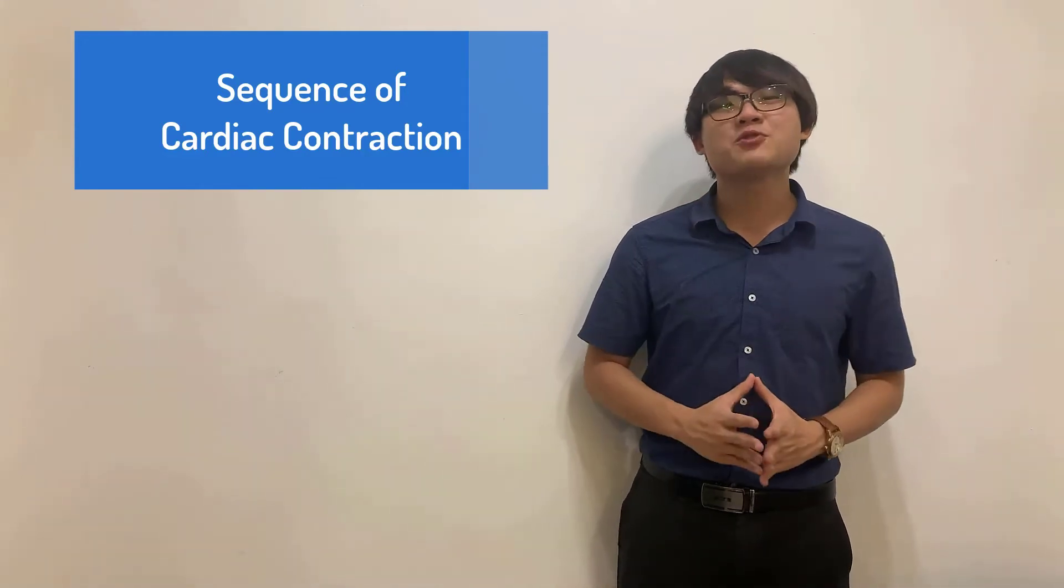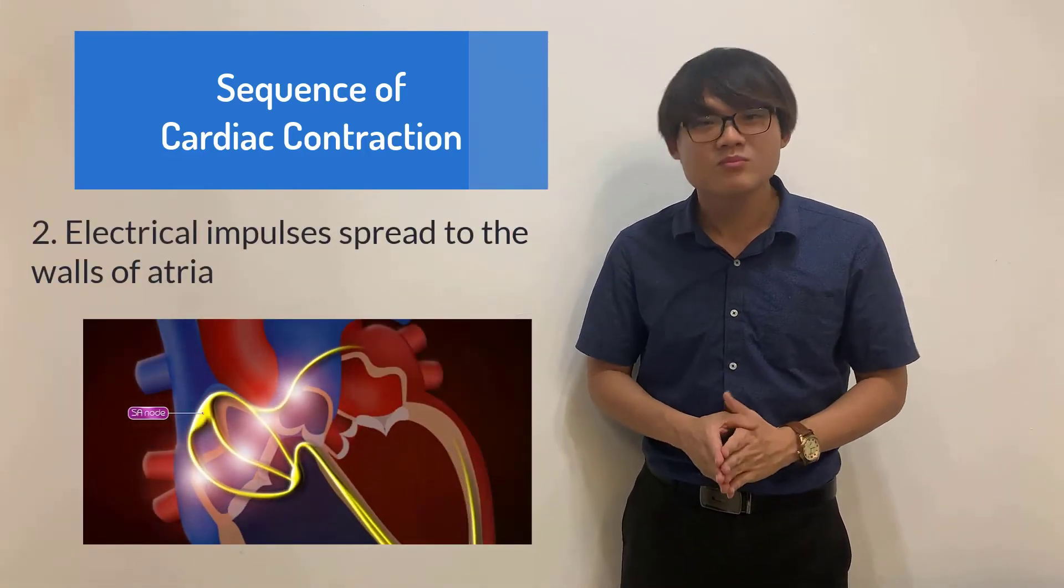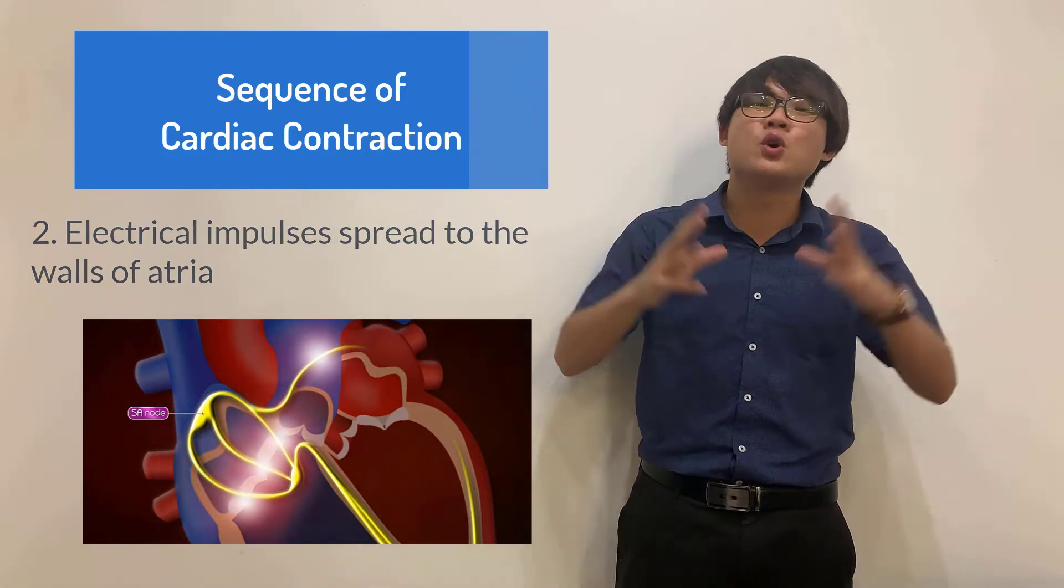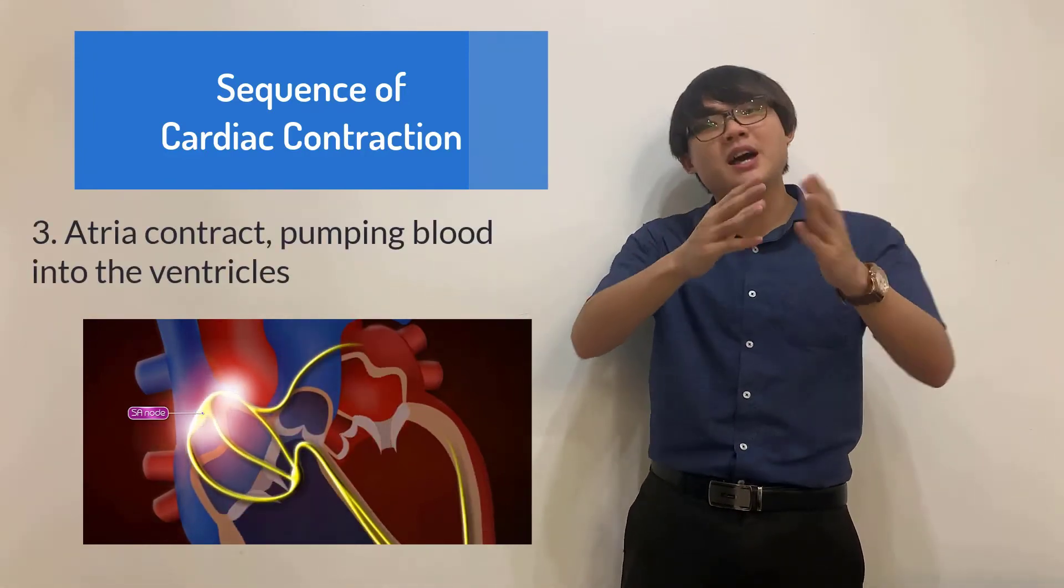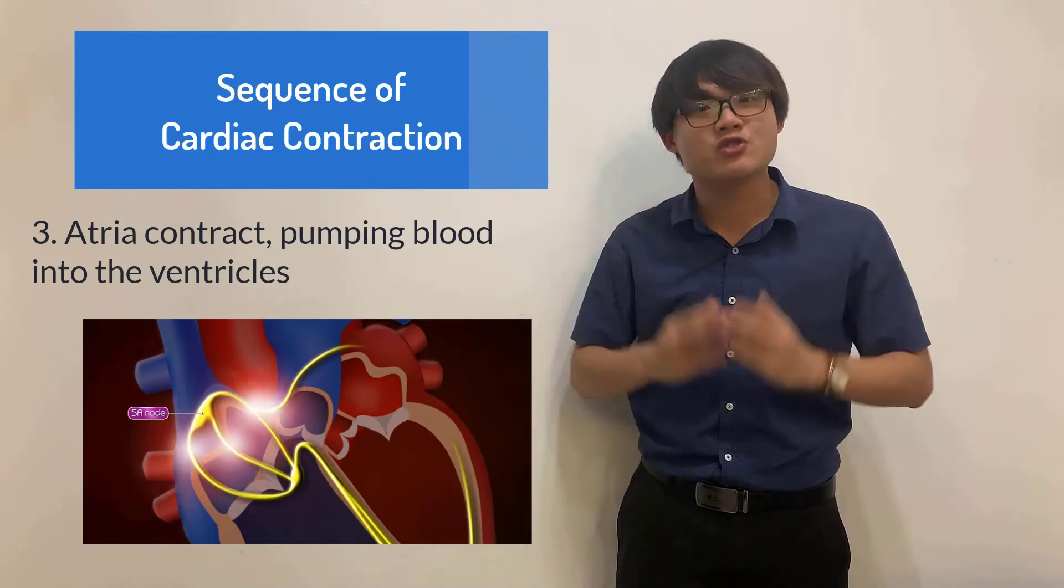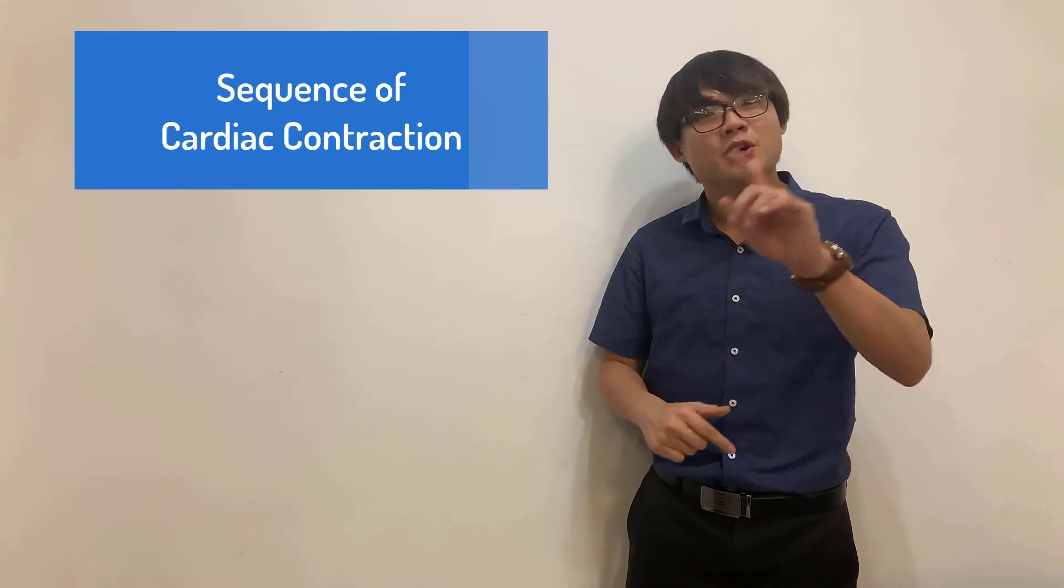Then the electrical impulses will first spread to the walls of the atria. After spreading to the walls of the atria, the atria will then contract and the blood will then flow from the atria to the ventricles. Is that clear?